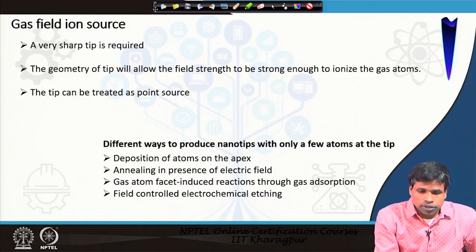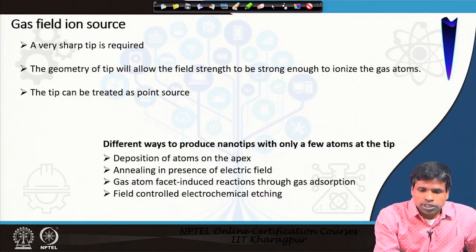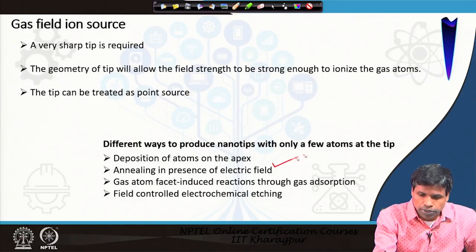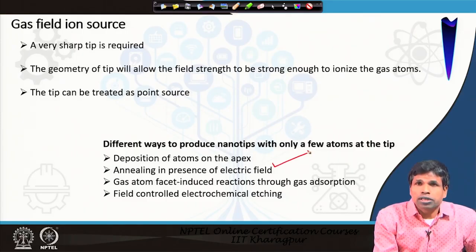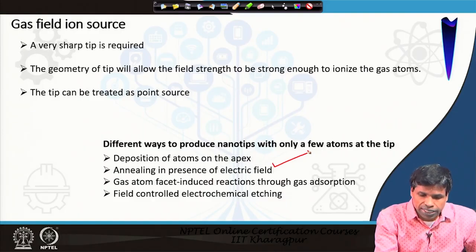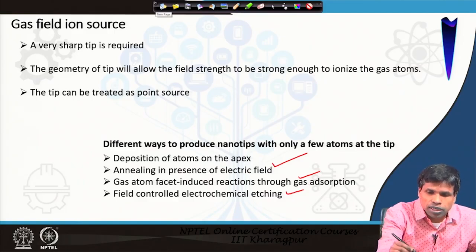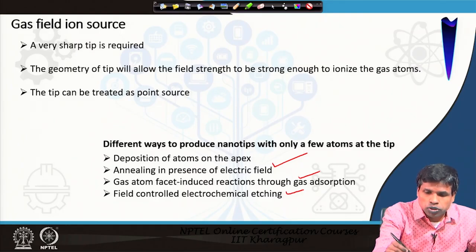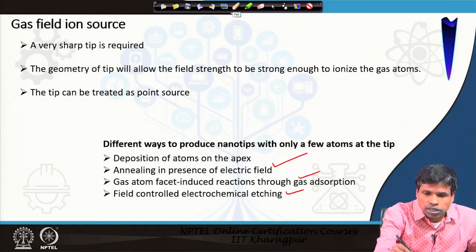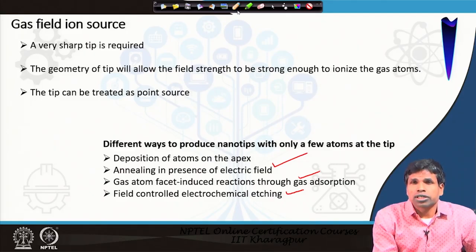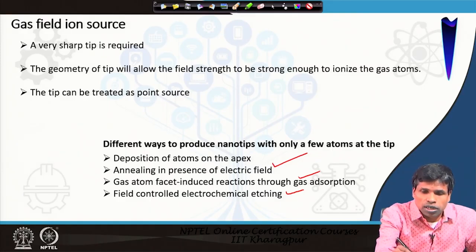There are different ways to produce nano tips: you can deposit atoms at the apex, anneal in the presence of an electric field (which is presently used in many helium ion microscopes), use gas atom faceted induction, or use field-controlled chemical reactions via gas adsorption. This is one of the primary criteria for getting the best resolution, and it is the manufacturer's responsibility to produce good tips for routine, repeatable results.